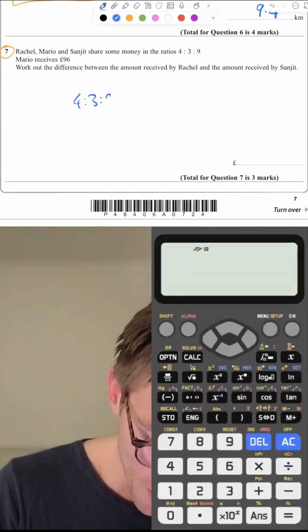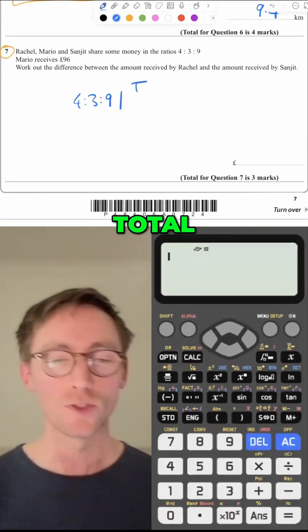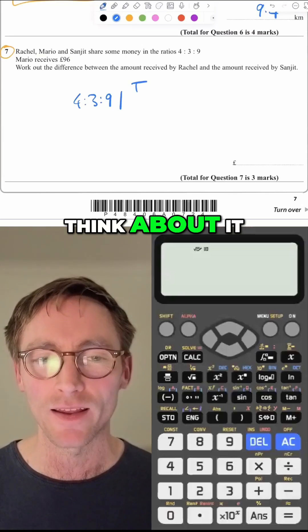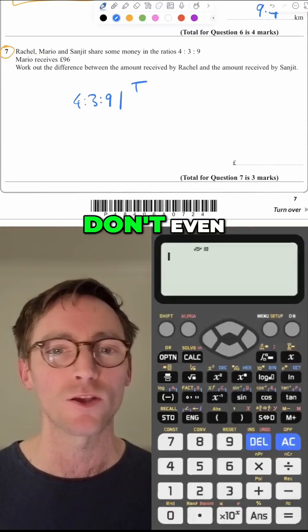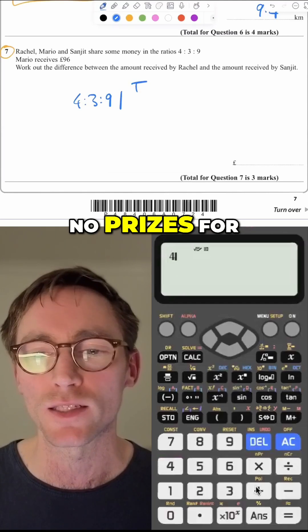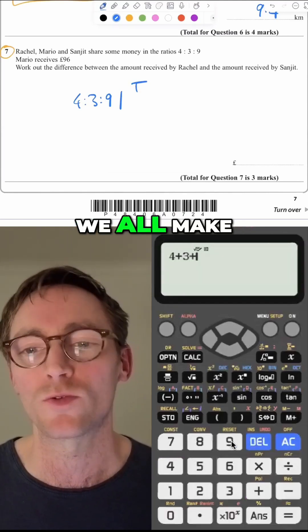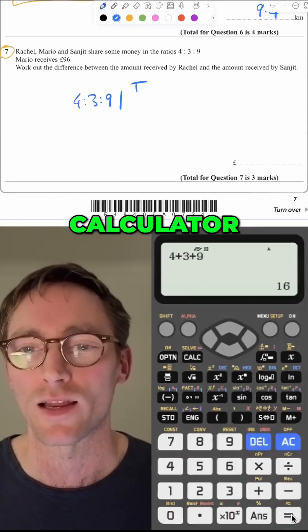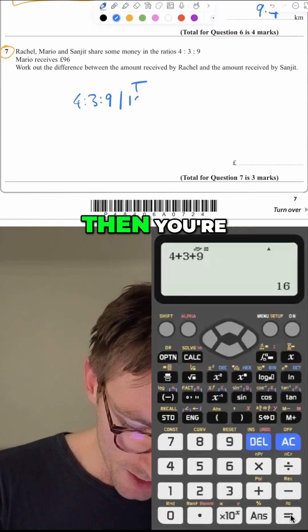You write the numbers down here and you add them up and do the total. Don't even think about doing anything else. Don't even read the question. Just write the total. Four, three, and nine. No prizes for doing that in your heads. We all make silly mistakes. Let's not, we got the calculator. Stick it in. 16.